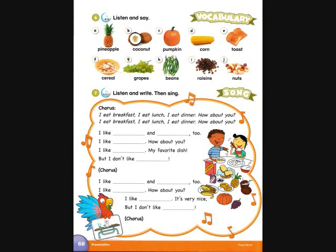Track B56. Page 68. Activity 7: Listen and write, then sing. I eat breakfast. I eat lunch. I eat dinner. How about you? I like grapes and pineapple too. I like coconut. How about you?